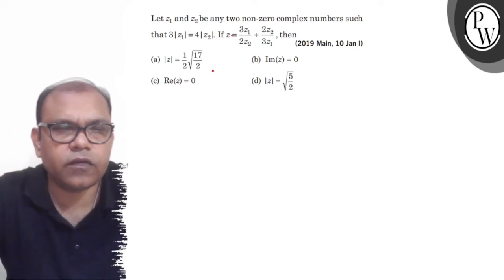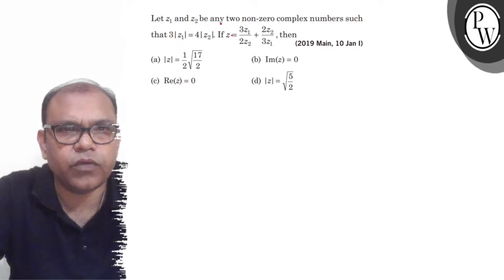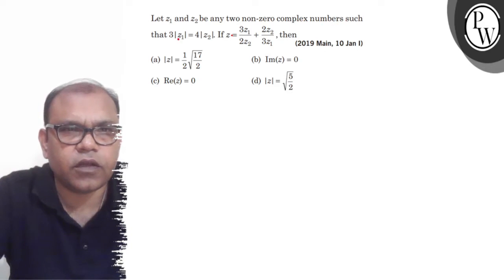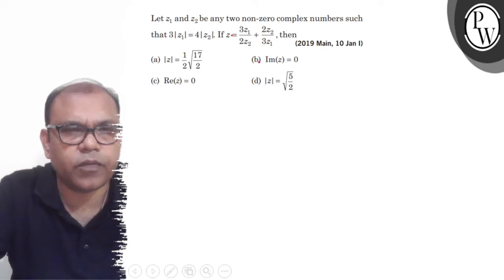Hello, let's see the question. The question says: let Z1 and Z2 be any two non-zero complex numbers such that 3 mod of Z1 equals 4 mod of Z2. If Z equals 3Z1 over 2Z2 plus 2Z2 over 3Z1, then there are 4 options.